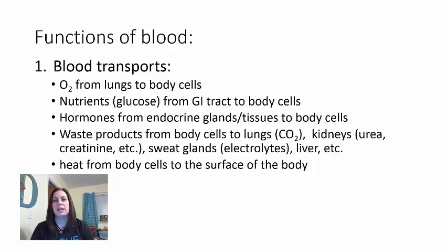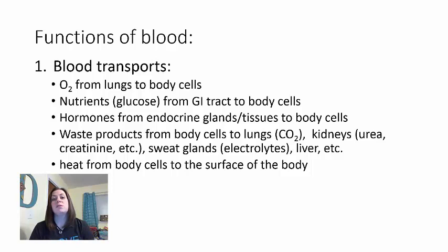The first function of blood is that it's going to transport things. One of the most specific things it transports is oxygen, carrying it from our lungs to our body cells. It also transports nutrients—specifically glucose, but also amino acids and fatty acids—from our GI tract to our body cells, and hormones from our endocrine glands and tissues to their target cells.